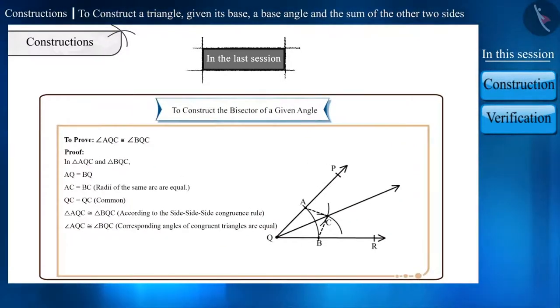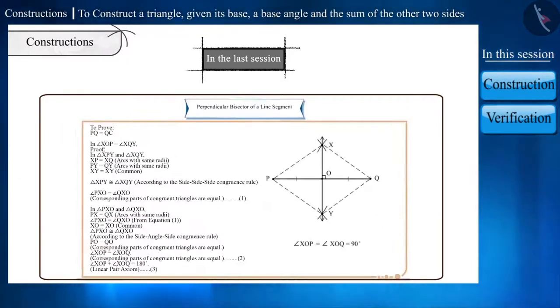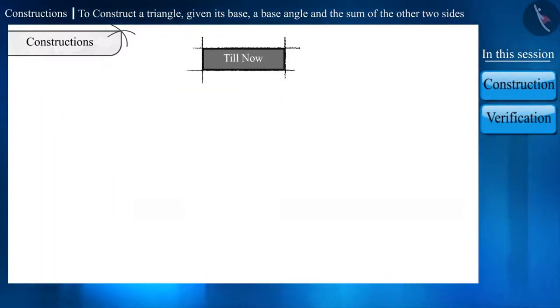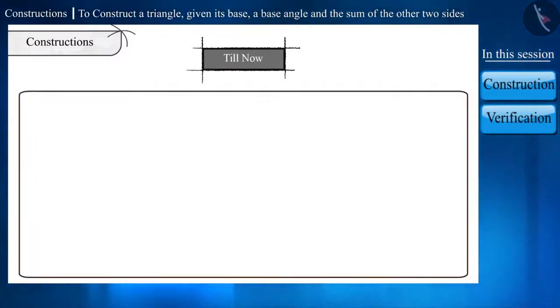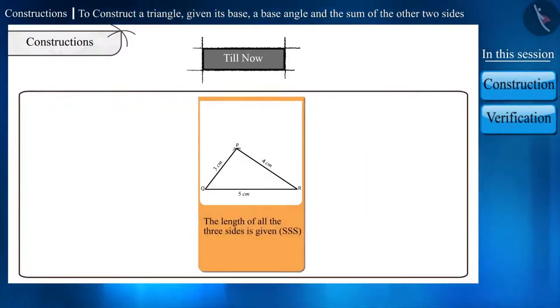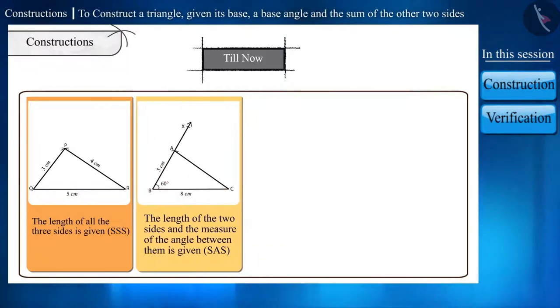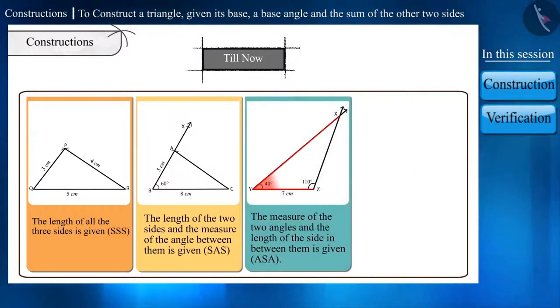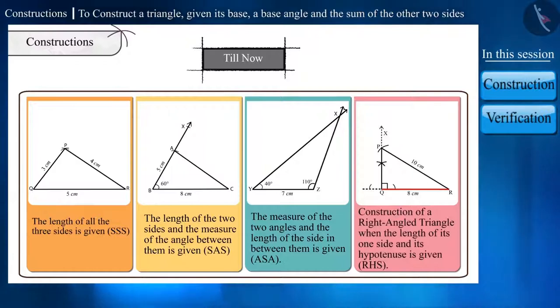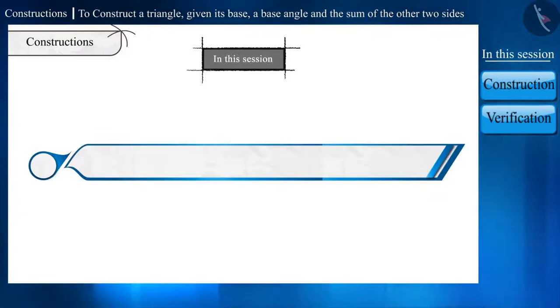Additionally, we also learnt to depict them in mathematical form. Friends, in the previous classes we have learnt the general construction of triangles such as the construction of a triangle when the length of all its sides is given, construction of a triangle when the length of its two sides and the measure of the angle between them is given, construction of a triangle when the measure of its two angles and the length of the side in between them is given, and the construction of a right angle triangle when the length of its one side and its hypotenuse is given. In this session, we will learn the construction of a triangle given its base, a base angle, and the sum of the other two sides.